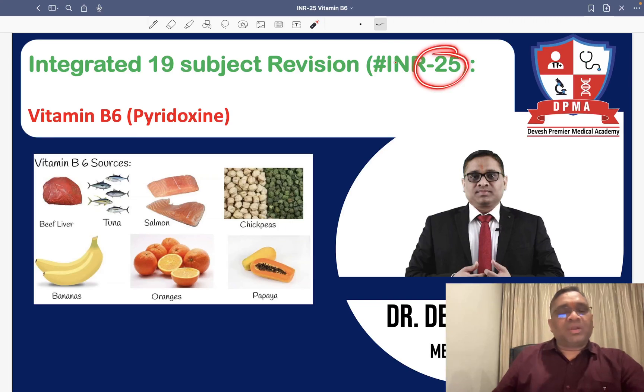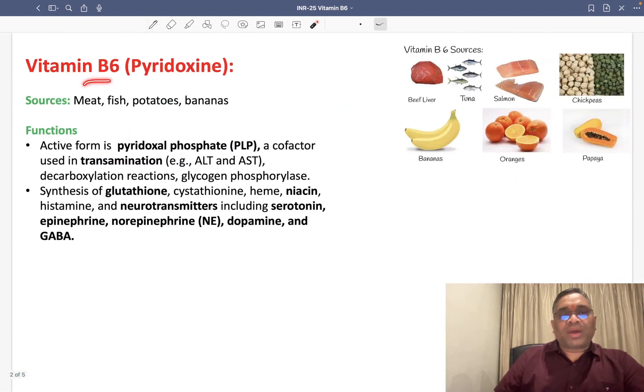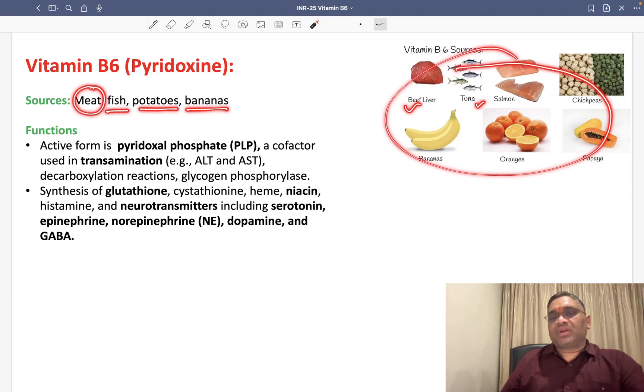Hello everyone, in this INR number 25 we are going to discuss Vitamin B6, which is also called pyridoxin. What are the sources? The sources are meat, fish, potatoes, and bananas. You can see these are the sources: beef liver, tuna, salmon, chickpeas, banana, oranges, and papaya.